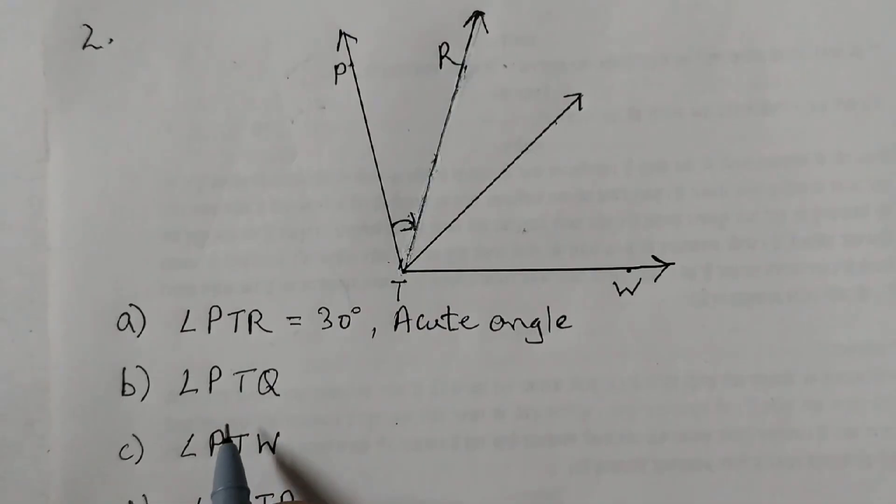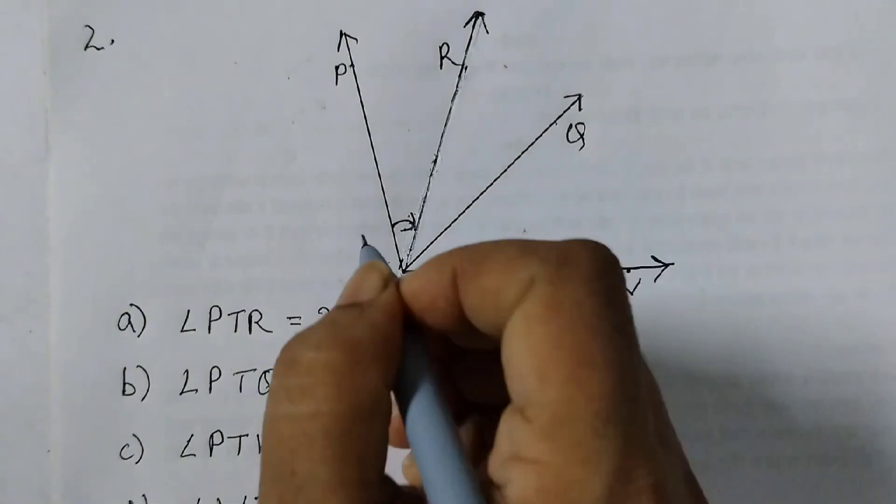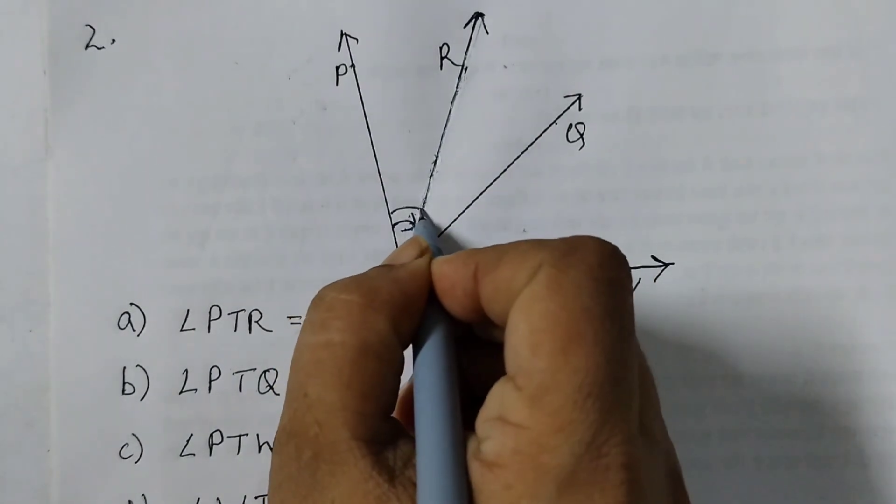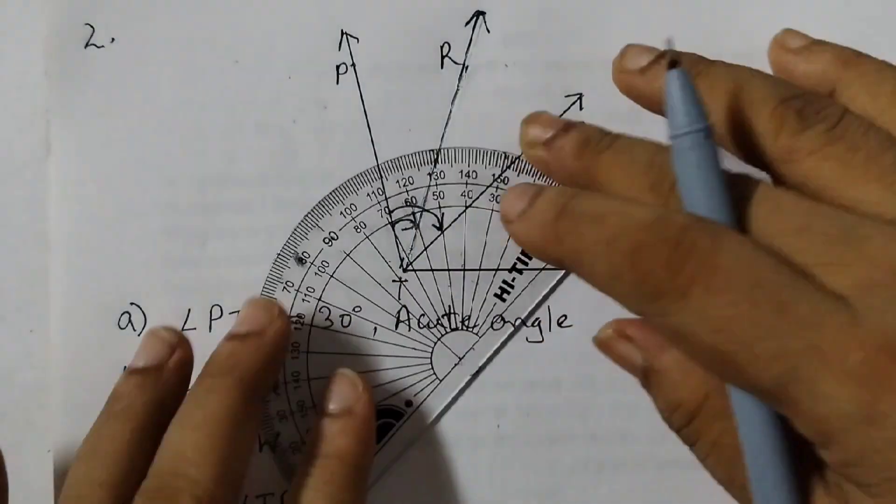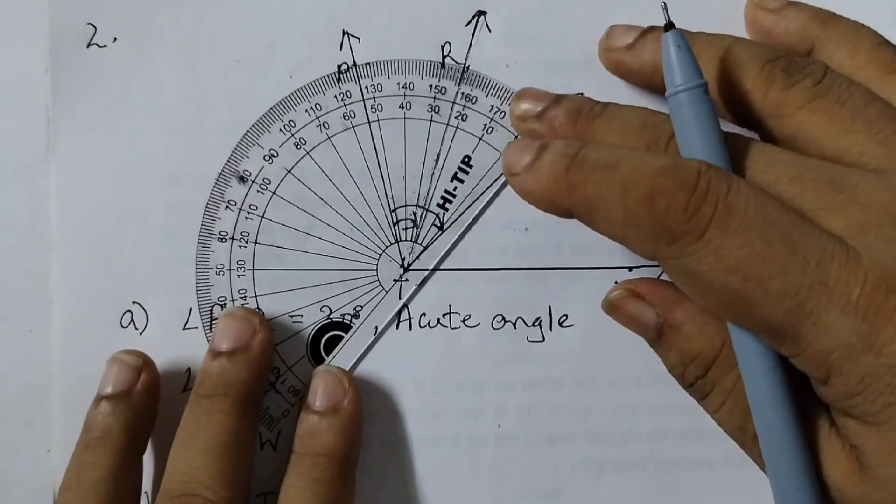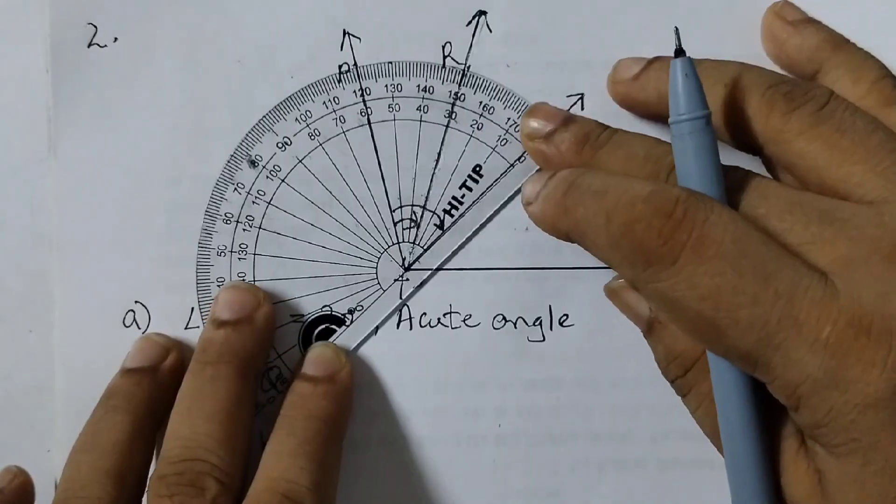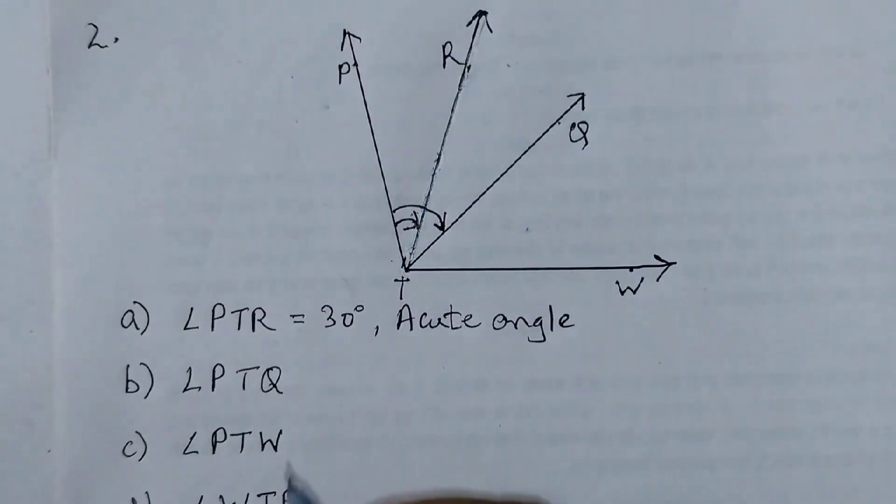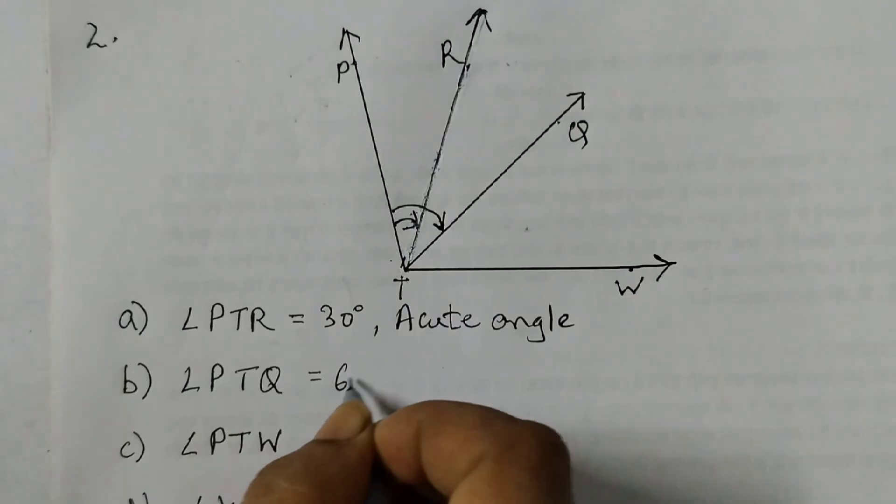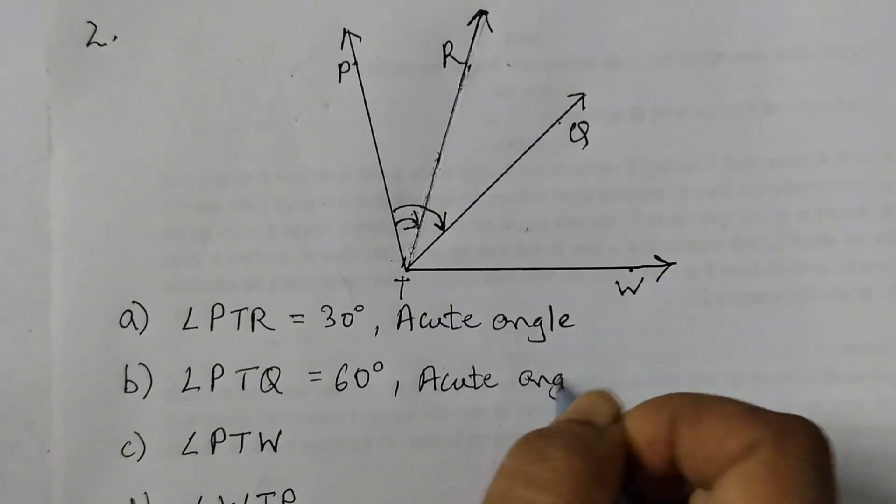Next one is angle PTQ. This is given as P, T. This point is Q and it is shown like this. So this is the amount of rotation. We can place your protractor like this. This is your base line. And we see that's 60 degrees. See the line is coming out here, so that will be 60 degrees. That's again an acute angle.